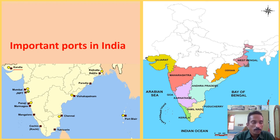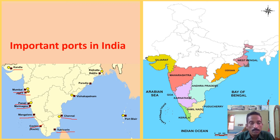The important ports of India are: Kandla in Gujarat; Mumbai and JNPT in Maharashtra; Panaji and Mormugao ports in Goa; Mangaluru in Karnataka; Kochi in Kerala; Tuticorin and Chennai in Tamil Nadu; Visakhapatnam in Andhra Pradesh — a natural port; Paradip in Odisha; and Kolkata and Haldia in West Bengal.